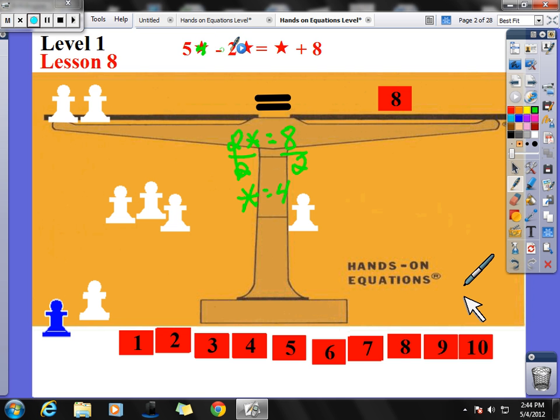We're going to plug in a 4 here and a 4 here. 5 times 4 is 20. 2 times 4 is 8. 20 minus 8 is 12. And 4 plus 8 is 12. So my check is 12 check 12. Again, make sure you're checking both sides of your equal sign to make sure that you get it right. Because if your checks don't work, then your x or your star is not correct.